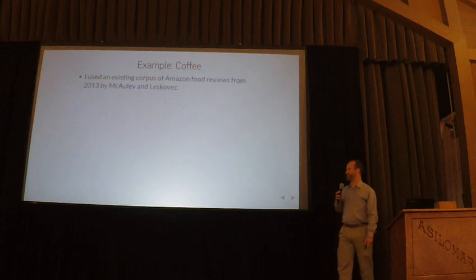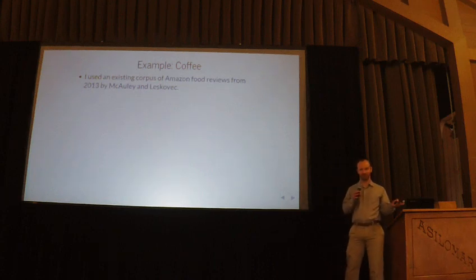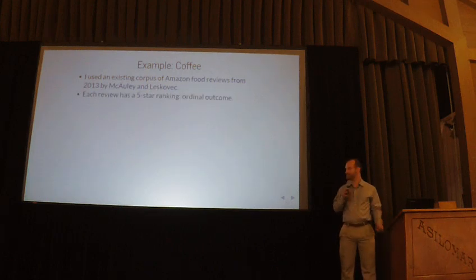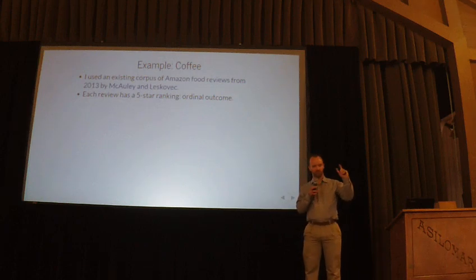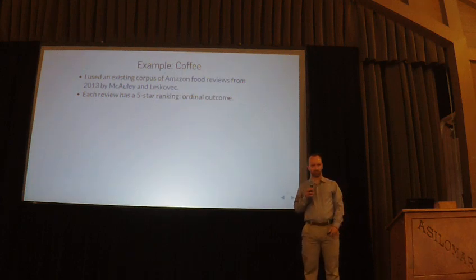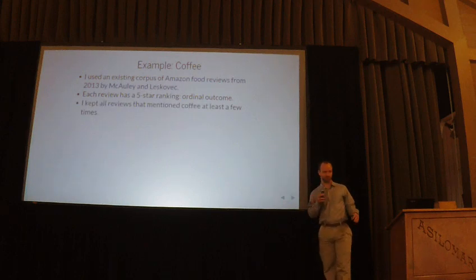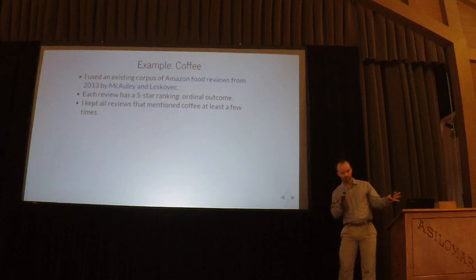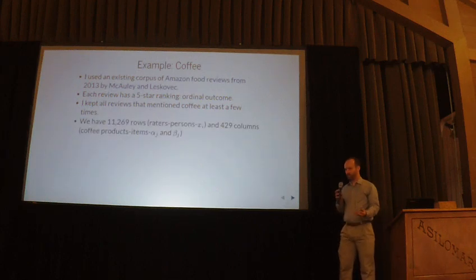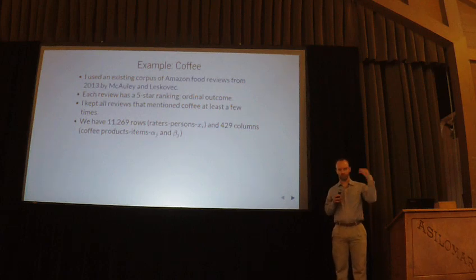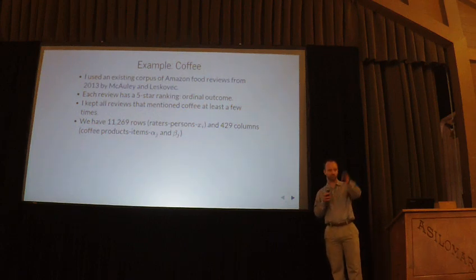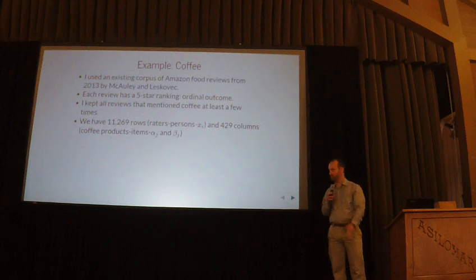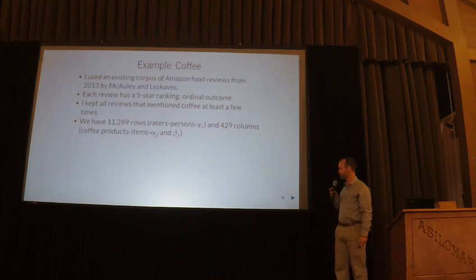The example I'm going to do today is not actually from political science, because some people love politics and some people hate it. So I decided to go with coffee, because we all love this hopefully. I pulled out a dataset from Amazon food reviews. Every rating has five stars, so it's an ordinal outcome. I used a regular expression to select products that mention coffee — so these are really coffee-related products. From that you get a big matrix: about 11,000 different raters who have rated at least three products in this set, and 429 columns — one column for every product.